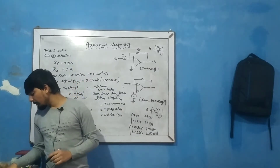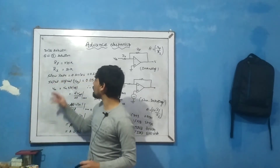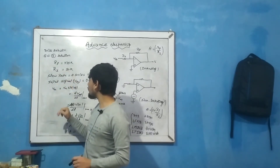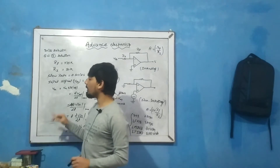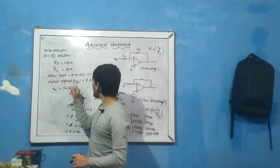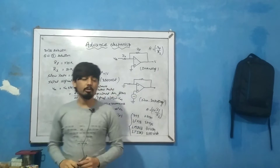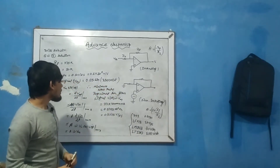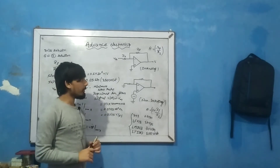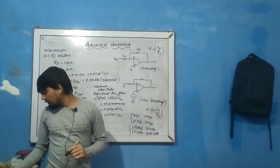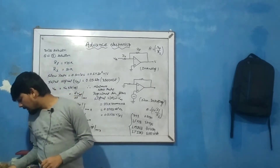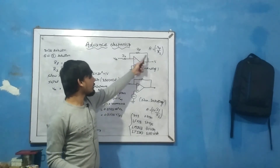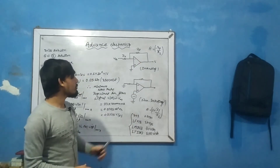Now we have a numerical. Given: RF, R1, slew rate = 0.5 volt per microsecond (which is 0.5 × 10⁶ volt per second), and input signal VIN = 0.05 sin(ωt). You can check the full question in the description section. This involves an inverting op-amp configuration with RF and R1.